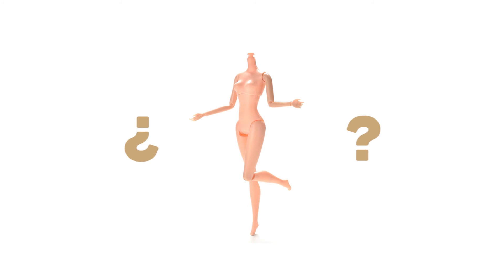Before we get into this, we have to think about where the tattoo is going to be placed, how big it's going to be, and where we want to do it. Like when we draw on a canvas, the surface marks the design. It's not the same to get a tattoo on your wrist as to get one on your elbow, for example. We have to keep in mind the area size, the area shape, and the color of the area.